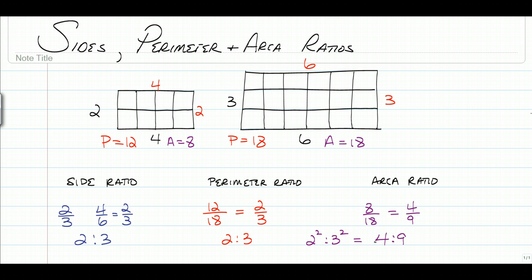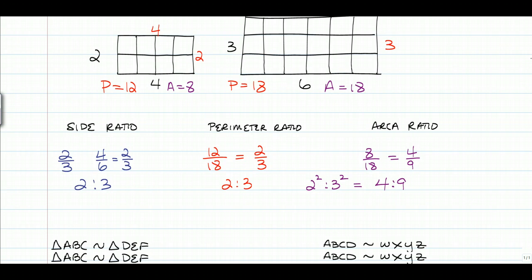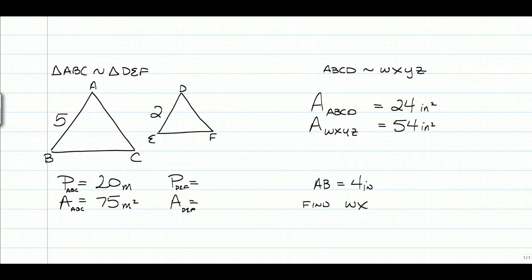So now that we know that, the ratio of sides is going to be the same as the ratio of the perimeters, but the ratio of the area is going to be the side ratio squared. So we can use that to answer different types of questions.